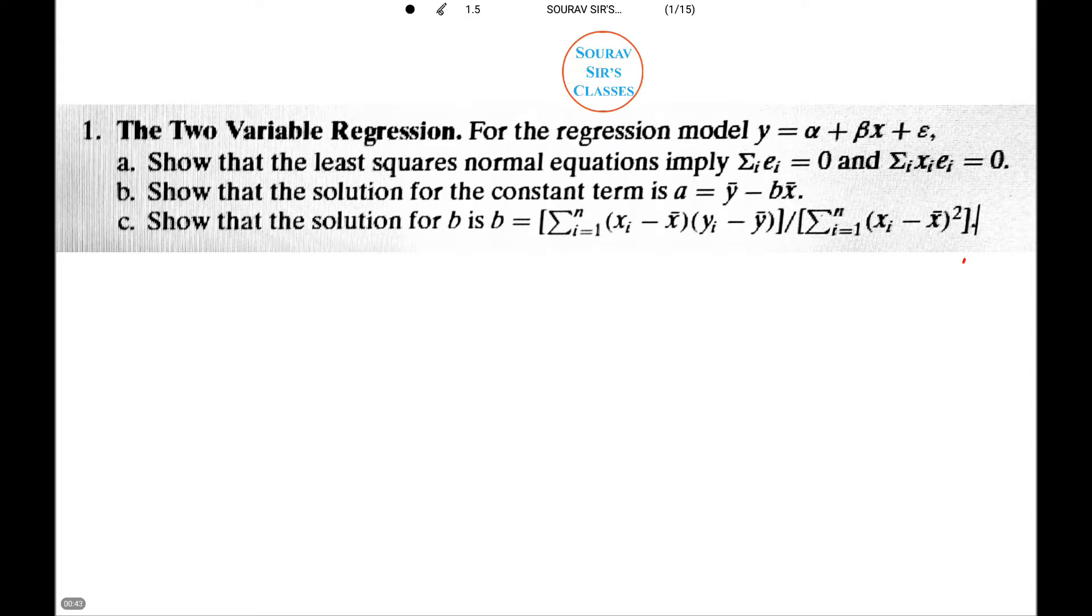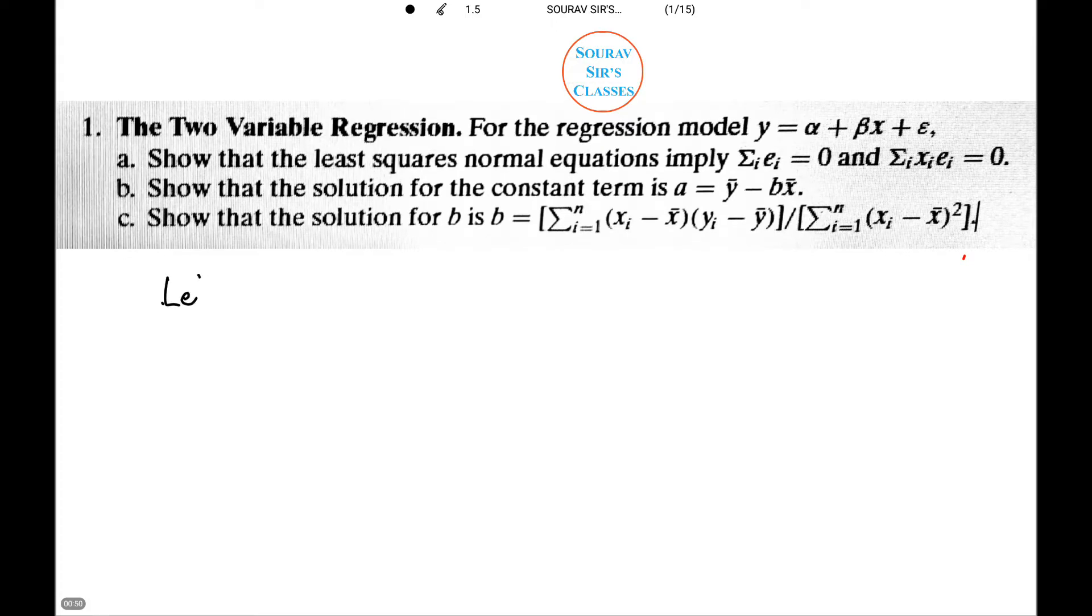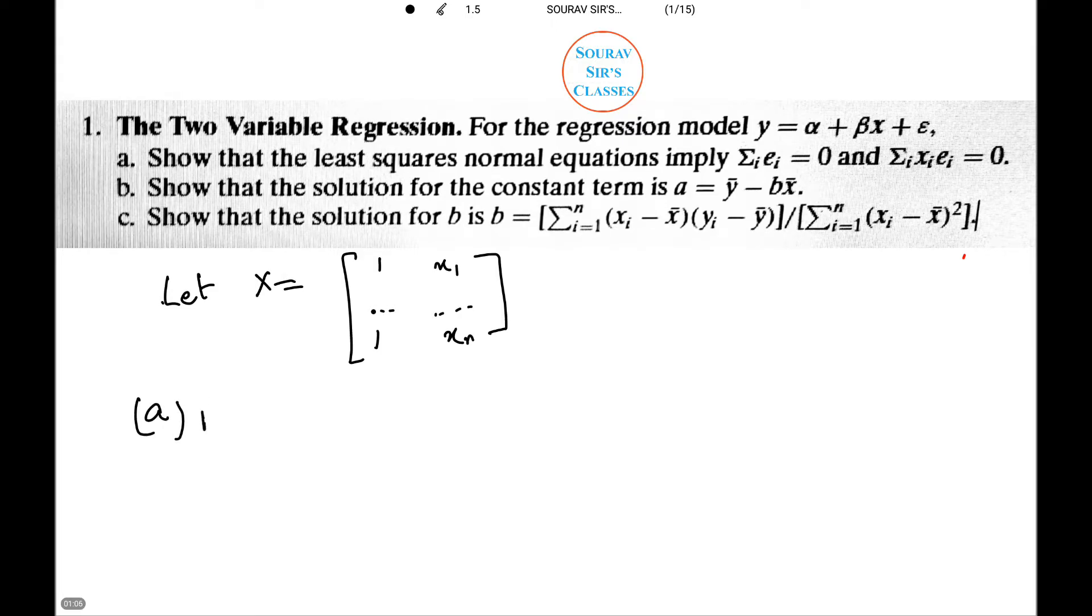So, let X equals [1, x_1; ... ; 1, x_n]. The normal equations are given by X^T X b minus X^T y equals minus X^T e, which equals 0.